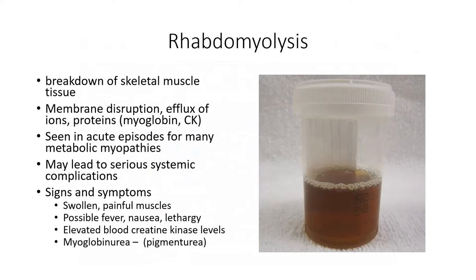One final topic to introduce in this segment, which plays a prominent role in many of the metabolic myopathies, is rhabdomyolysis. A complication seen with a number of the metabolic myopathies is metabolic crisis in which energy deficiencies and metabolite buildup can result in dramatic and widespread muscle damage and the leakage of intracellular contents into the blood.